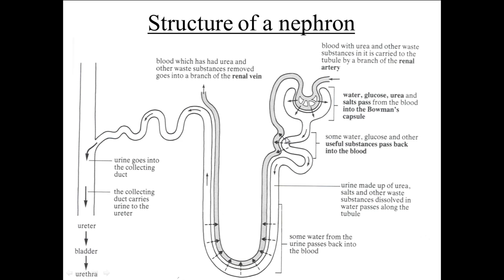So that's things like water, glucose, and some salts as well. Down here in the loop of Henle, some of the water also passes back into the blood. And we'll focus on this when we look at osmoregulation.